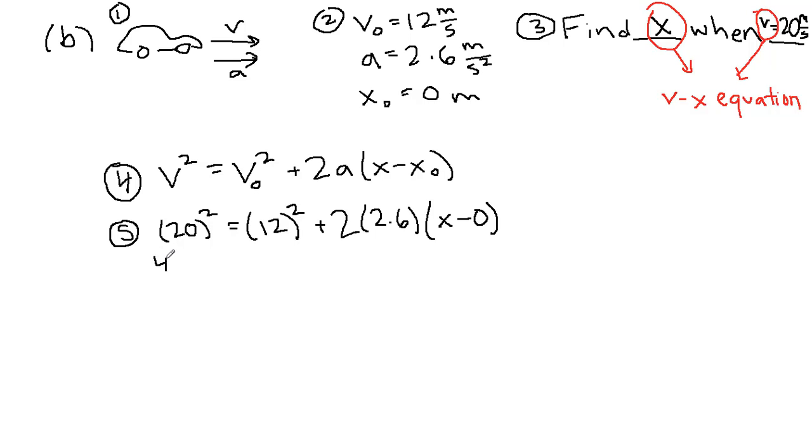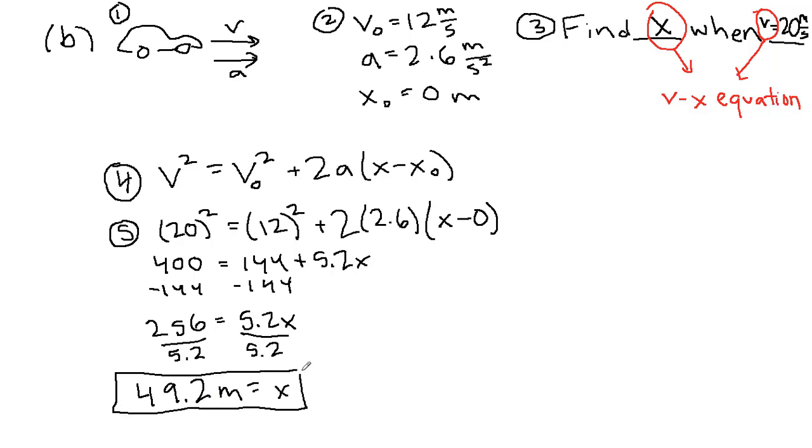Let's simplify this a little bit. Using our calculator, we have that 400 is equal to 144 plus 5.2x. We can then subtract 144 from both sides, so we get 256 is equal to 5.2x. And then we can divide both sides by 5.2. We end up with 49.2 meters is equal to our final position.